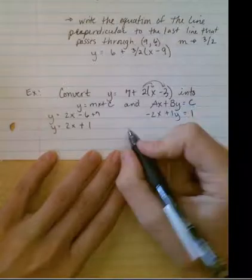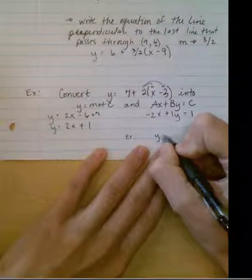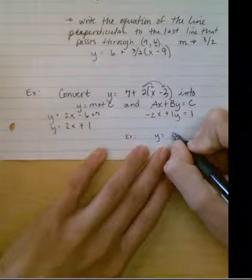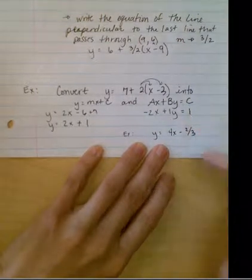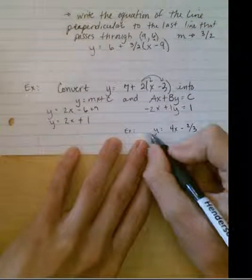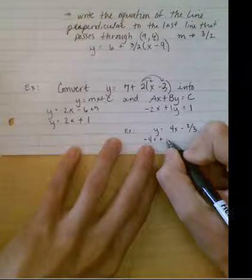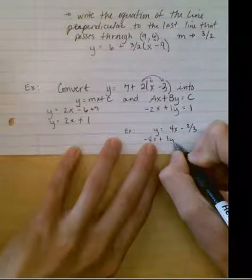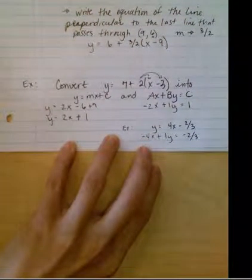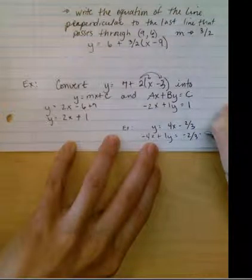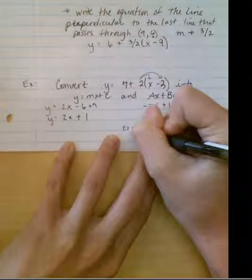If you were looking at a tricky one, let's say I had something like this: y equals 4x minus 2 over 3. We might want to do a little bit more. You would bring the 4x over still, so minus 4x plus 1y equals negative 2 thirds.